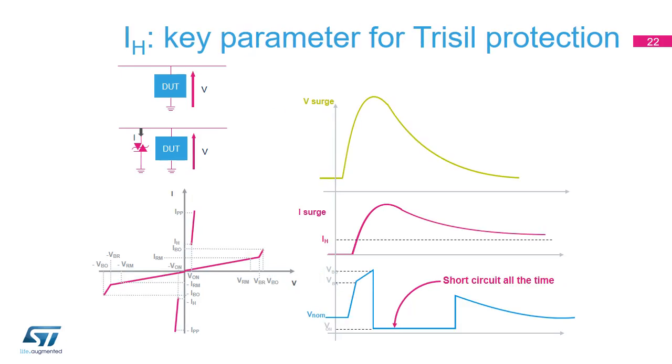Why is IH a key parameter? And why must designers make sure that the current is lower than the holding current? The reason is that if the current can never get back to the holding current, the trisil, triggered during the surge, never gets back to its initial state, and so always short-circuits the lines.